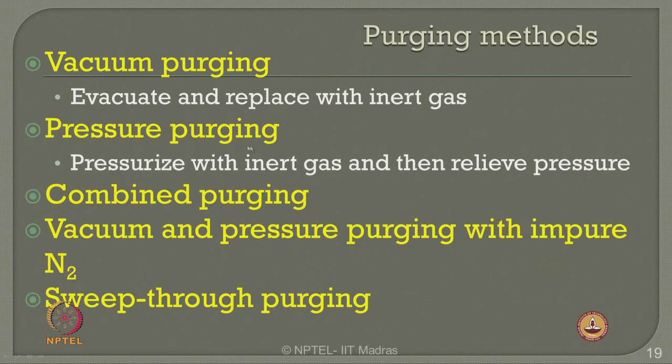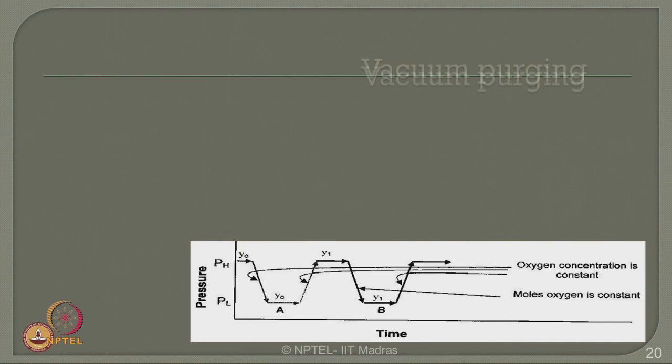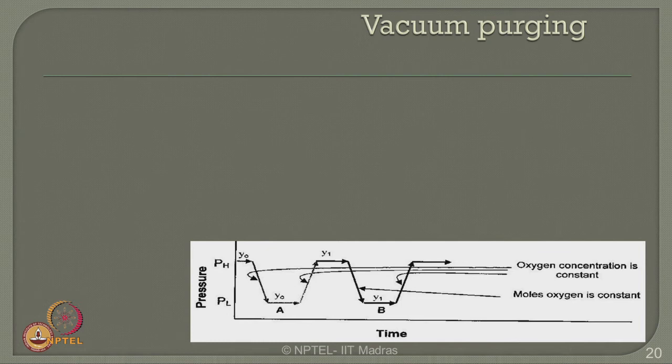In vacuum purging, we evacuate and replace with inert gas completely. In pressure purging, we pressurize with inert gas and then relieve the pressure from the system. One can also do siphon purging. Let us look at vacuum purging: it is one of the most commonly used methods for inerting contained vessels. The procedure is: draw vacuum on the vessel, relieve the vacuum with inert gas, and repeat the cycle until the desired concentration is reached.